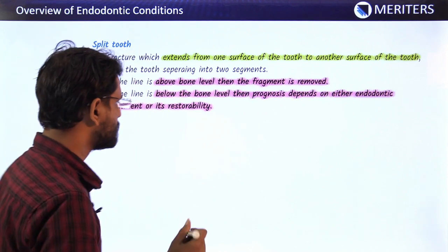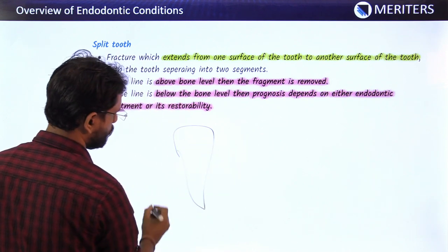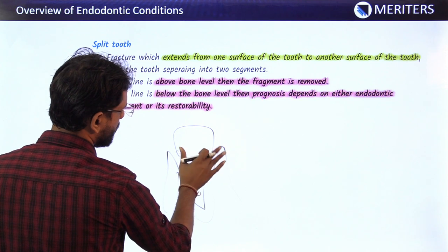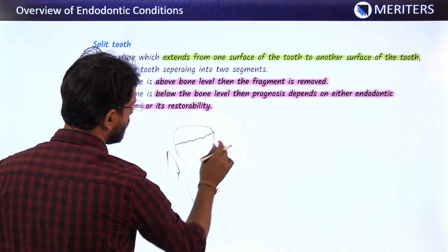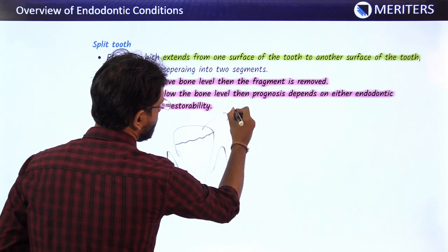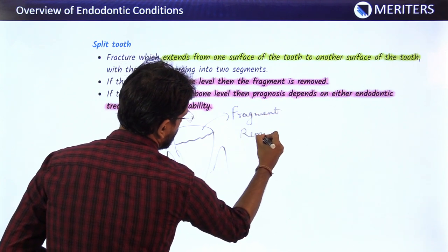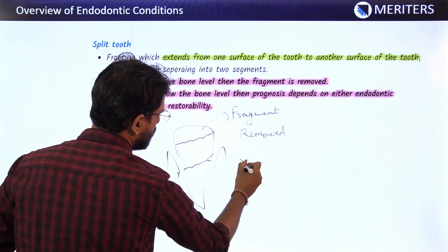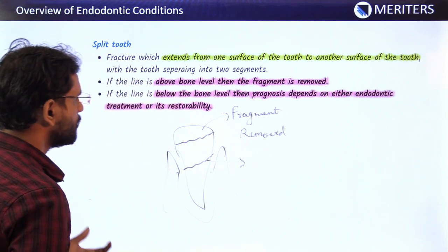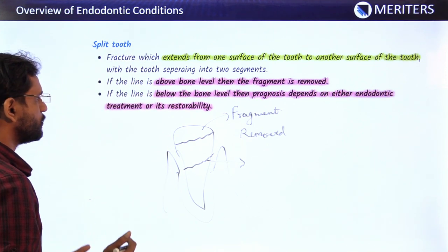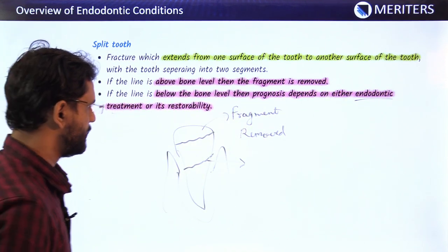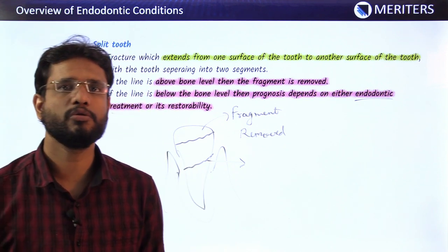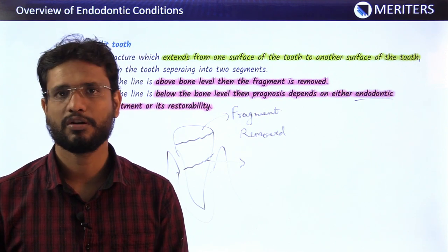Treatment of a split tooth depends on the position of the fracture line relative to the alveolar bone. If the fracture line is running above the bone level, the smaller fragment is removed. If it is running below the level of alveolar bone, we explore other options — endodontic treatment, splinting, or other approaches depending on prognosis. If the question asks when the fracture segment is removed, the answer is when the fracture line runs above the level of bone.